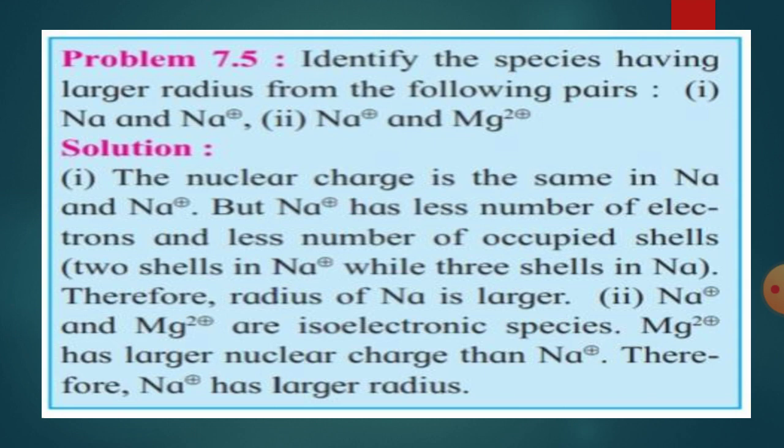Second pair: Na⁺ and Mg²⁺. These are isoelectronic species — both contain the same number of electrons. However, Mg²⁺ has a larger nuclear charge than Na⁺ because the atomic number of magnesium is 12 while sodium is 11, so magnesium has more protons. Hence Na⁺ has a larger radius compared to Mg²⁺. In this way you can find which species has the larger or smaller radius.